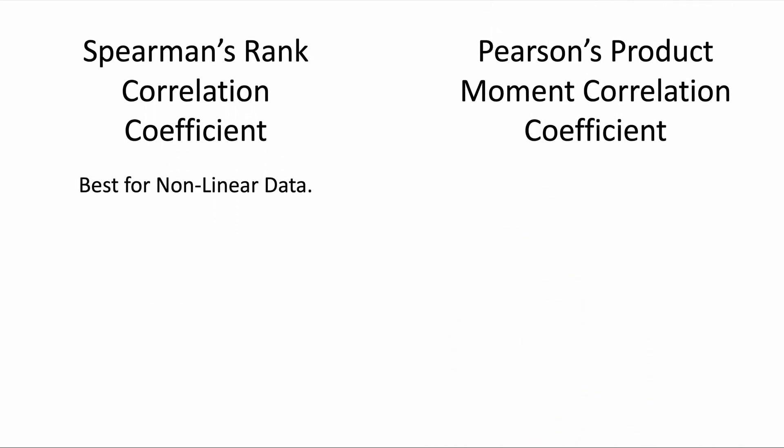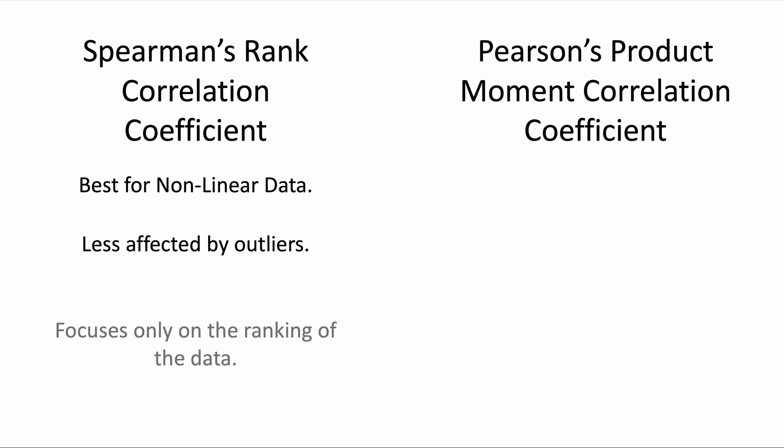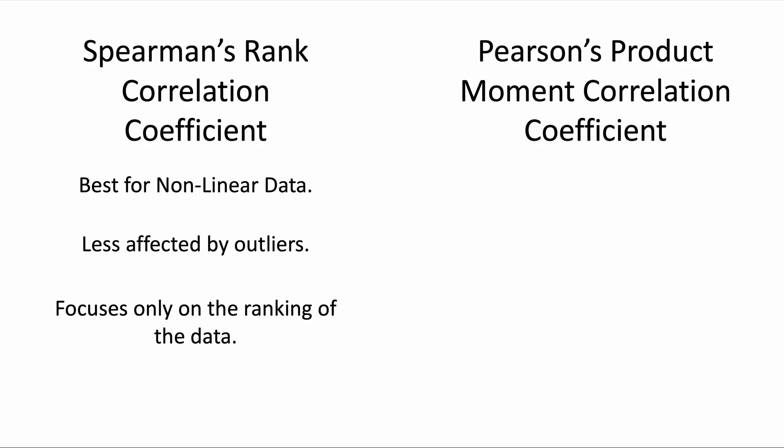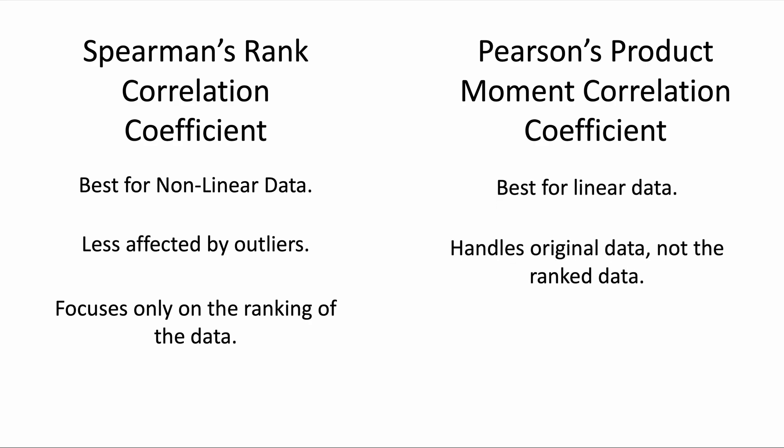Spearman's is good for non-linear data and it's also less affected by outliers. It focuses only on the ranking of the data — the order of the data — not the specific data values themselves. Whereas Pearson's is best for linear data and it handles original data, not the rank data. Pearson's focuses on the original data, not the ranking.